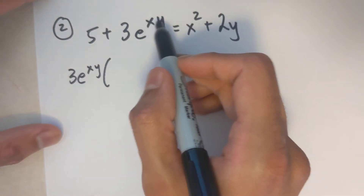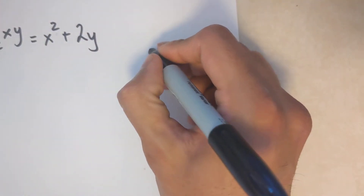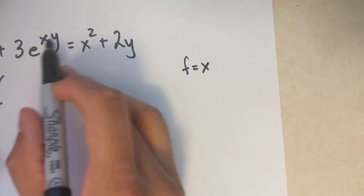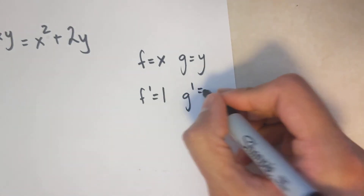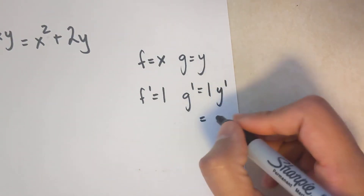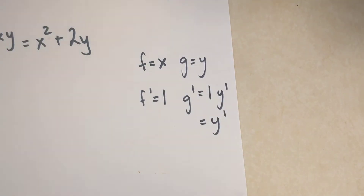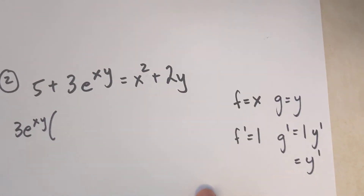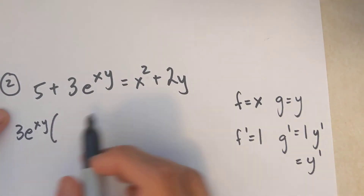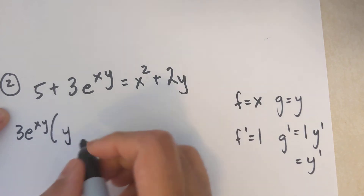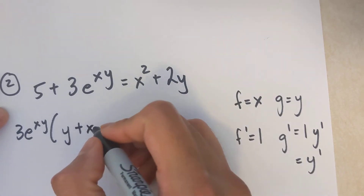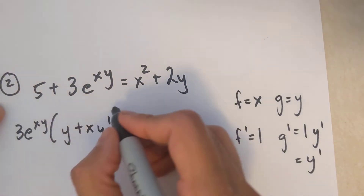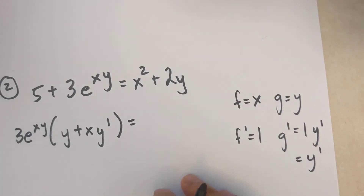I need the product rule for the exponent xy again. I'll do that on the side: f equals x, g equals y, f prime equals 1, g prime equals y prime. Substituting into f prime g plus g prime f gives y plus xy prime. The derivative of x² is 2x and the derivative of 2y is 2y prime.